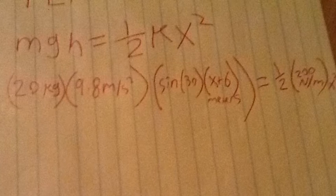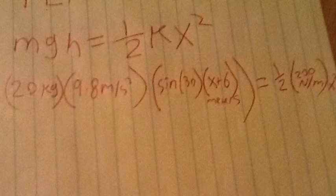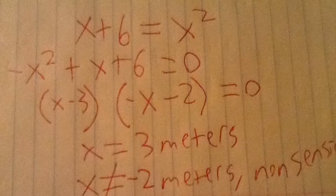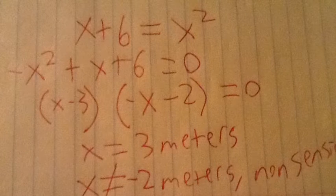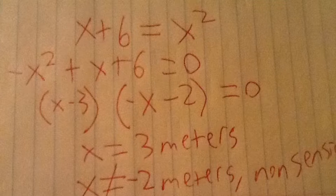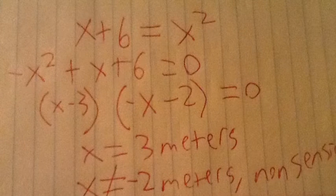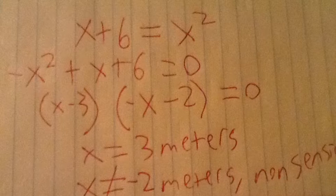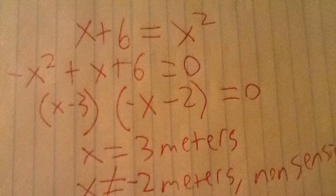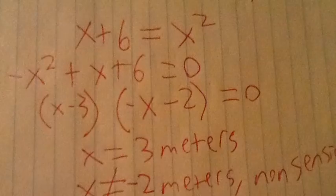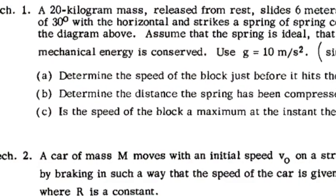Never mind, g equals 10 meters per second squared. Then, with some algebra, we find that x equals 3 meters. The compression distance cannot equal negative 2 meters, otherwise it would be elongated, which did not happen in this case. So, for the answer for part B, x compression distance equals 3 meters.